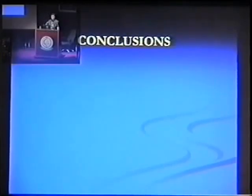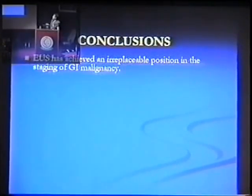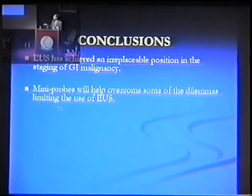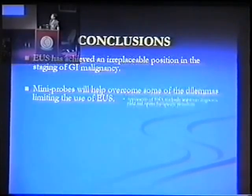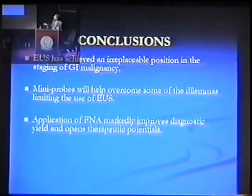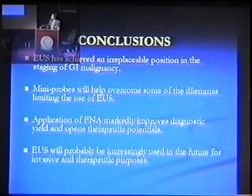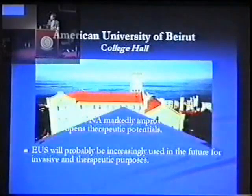This will be an introduction to the procedures you'll be seeing in this workshop. In conclusion, EUS has achieved an irreplaceable position in the staging of GI malignancy, specifically local regional staging. Many tiny ultrasound probes will help overcome the dilemmas limiting the use of EUS, especially for stenotic lesions that cannot be bypassed. EUS FNA markedly improves diagnostic yield and opens therapeutic potentials — not only for diagnosis, but also for therapeutic injections — and will probably be increasingly used in the future for invasive and therapeutic options.